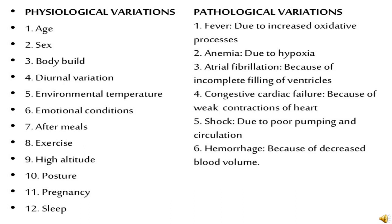Pathological variations include: fever — due to oxidative processes causing increased heart rate; anemia — due to hypoxia; atrial fibrillation — due to incomplete filling of the ventricles; congestive cardiac failure — due to weak contractions of the heart; shock — causing poor pumping and circulation of blood; and hemorrhage — due to decreased blood volume. These are the pathological variations that affect the cardiac cycle.